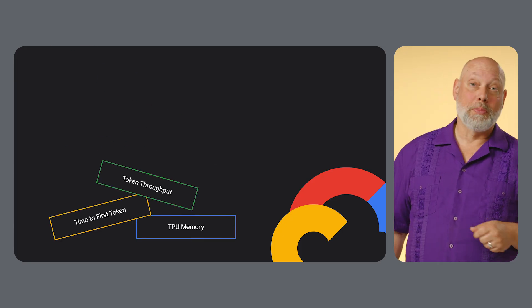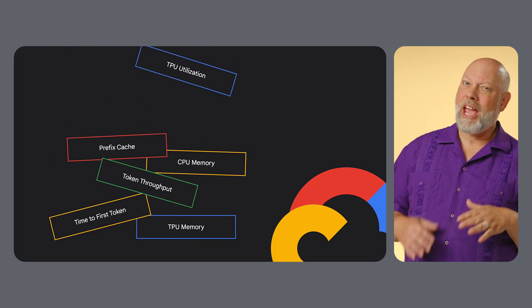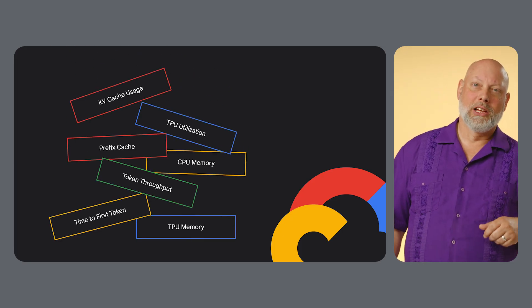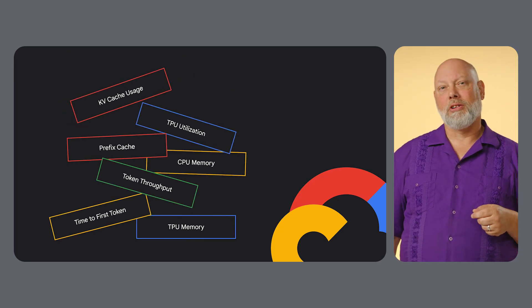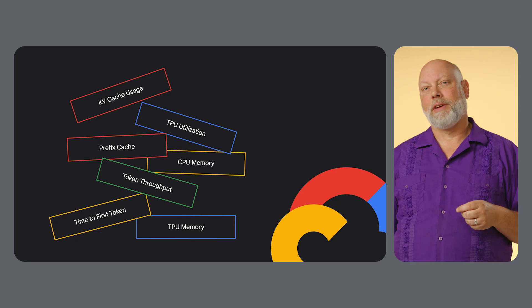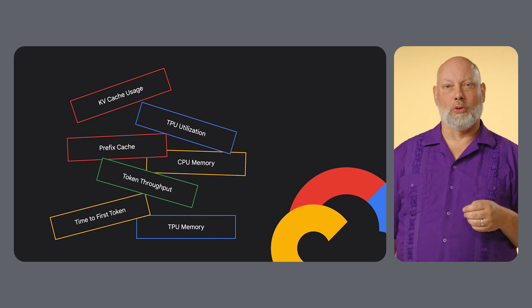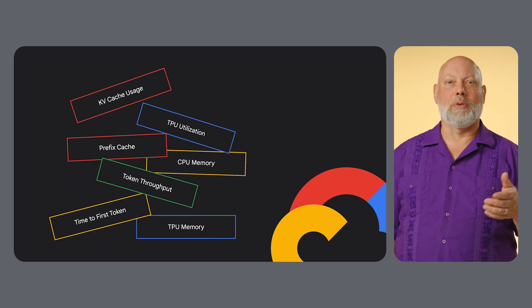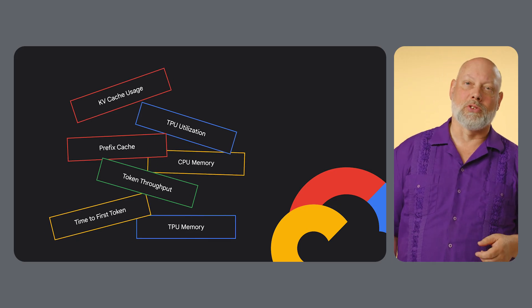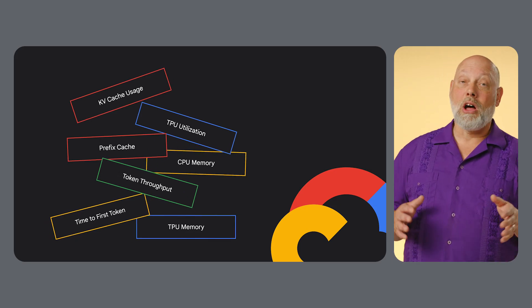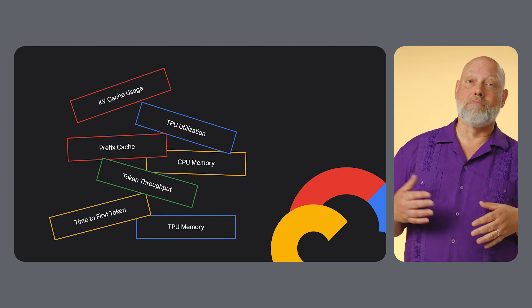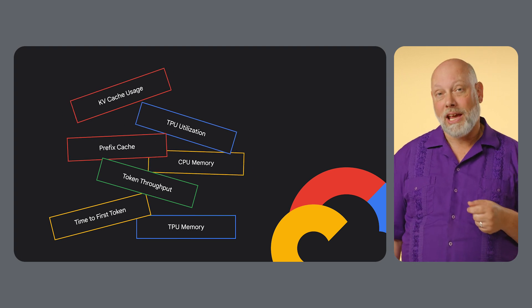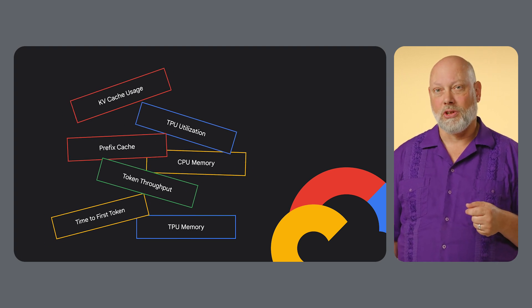Last, observability. You can't respond to what you can't see. Comprehensive monitoring of your models and infrastructure is crucial for identifying and resolving issues before they impact users. And there's a long list of metrics you can monitor, like prediction latency and KV cache usage.